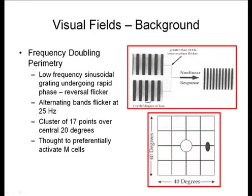Frequency doubling perimetry is something we do have the ability to perform here at Stony Brook, although we typically don't measure it. In this test, the stimulus is a low-frequency sinusoidal grating that undergoes a rapid flickering or phase change. When this phase change occurs, the eye or brain interprets it as a sinusoidal grating with twice the frequency of bands.